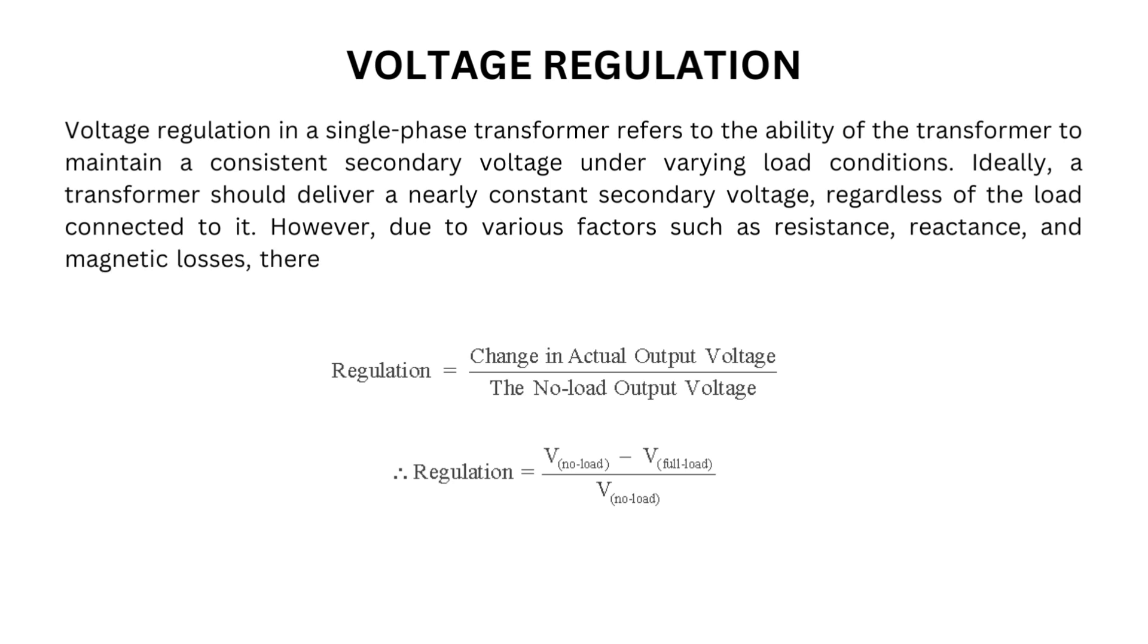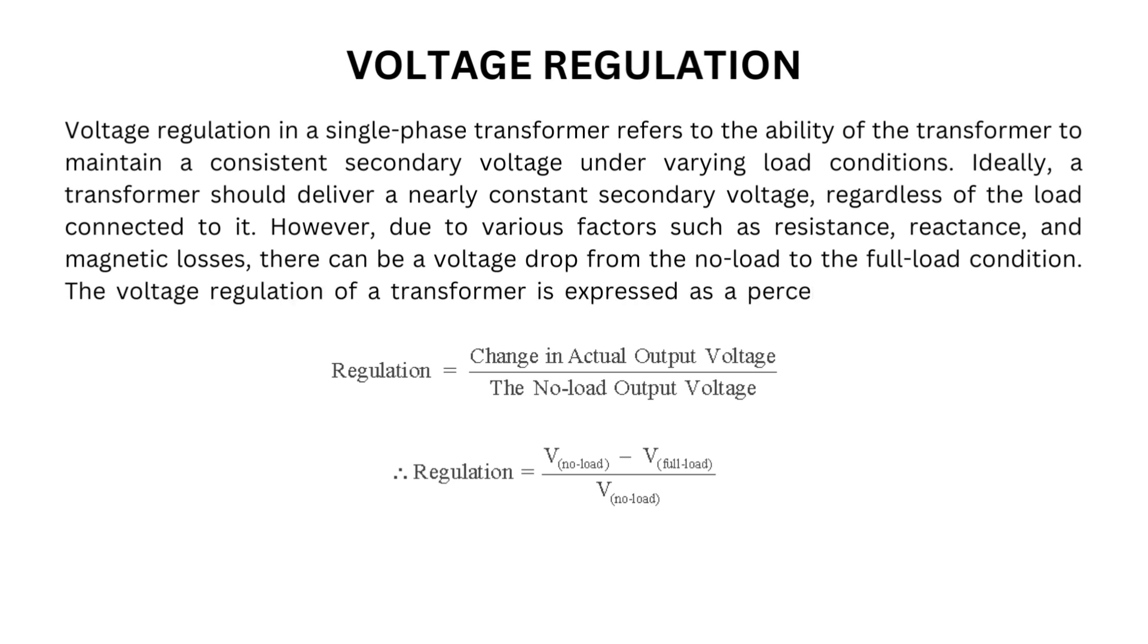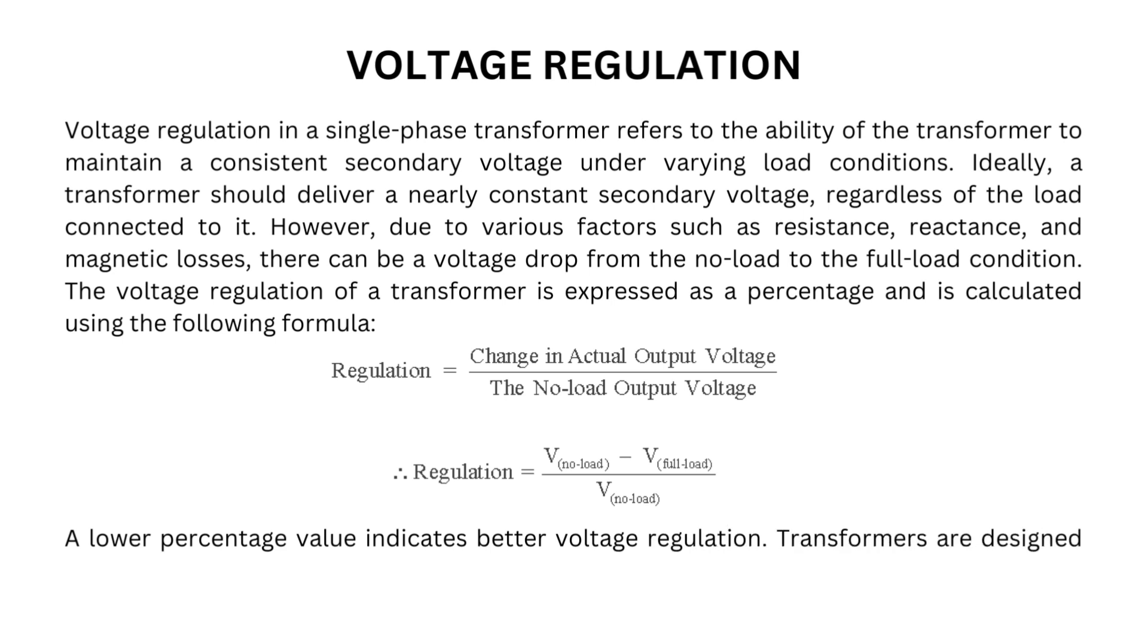reactance, and magnetic losses, there can be a voltage drop from the no-load to the full-load condition. The voltage regulation of a transformer is expressed as a percentage and is calculated using the following formula given below. A lower percentage value indicates better voltage regulation. Transformers are designed with specific voltage regulation limits to ensure the secondary voltage remains within an acceptable range.